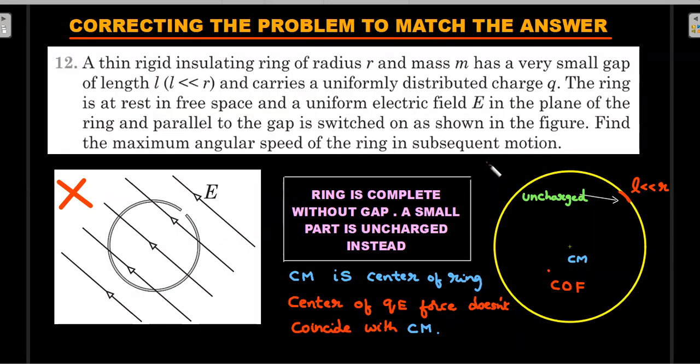Let's try to correct the wording of the question in order to get to the answer given in the book. That will enhance our concept understanding. This diagram is actually wrong, the left side one that is given in the book is wrong. What should have been the correct modification is that actually the ring is complete—there's no gap in the ring material-wise, mass-wise, there is no gap, so it is complete—but charge-wise there is a small l part which is uncharged.